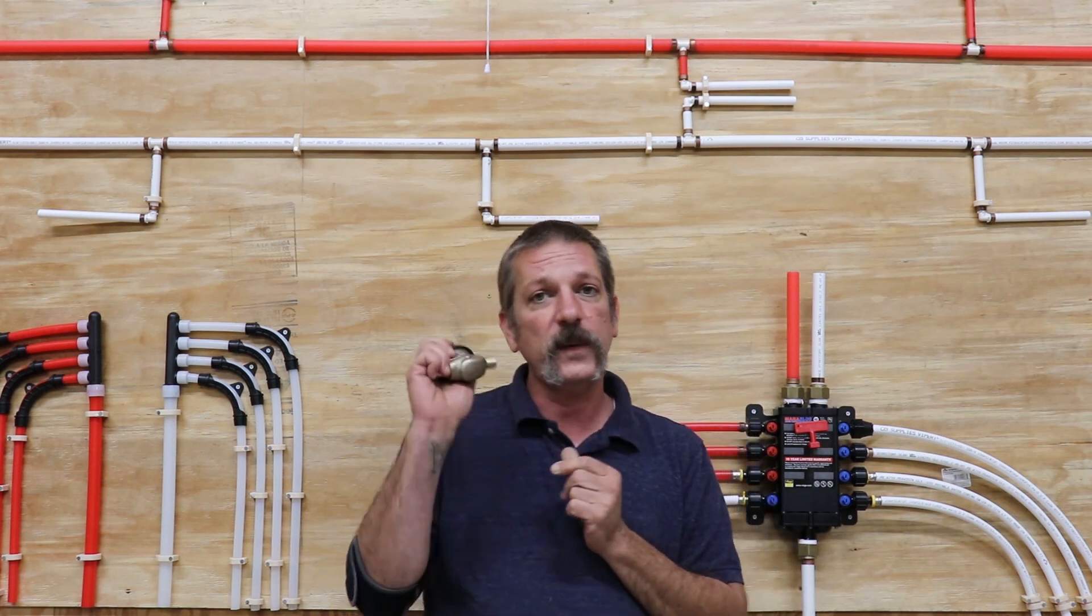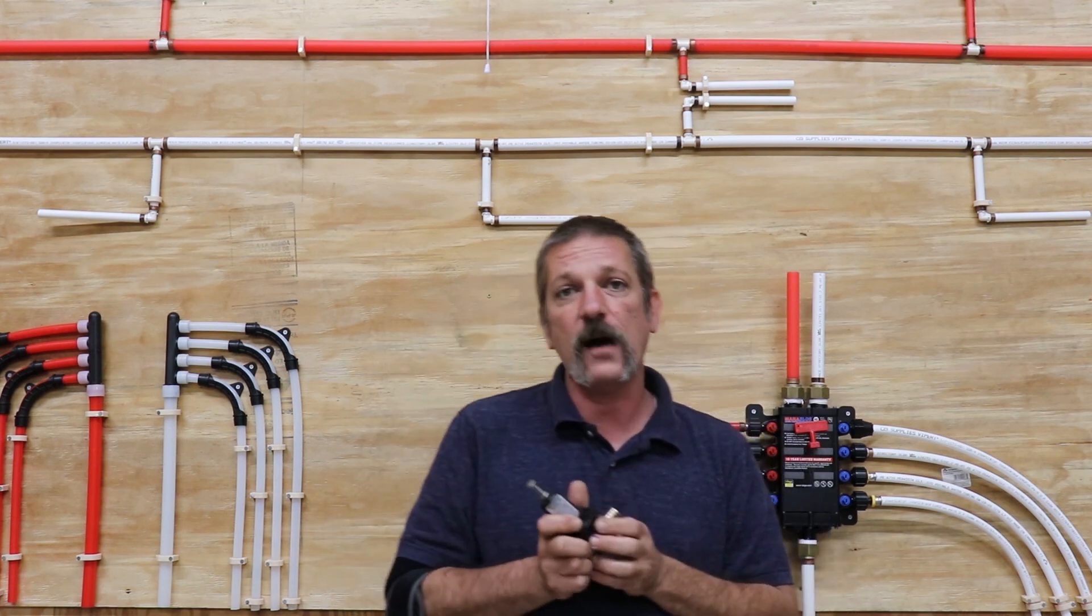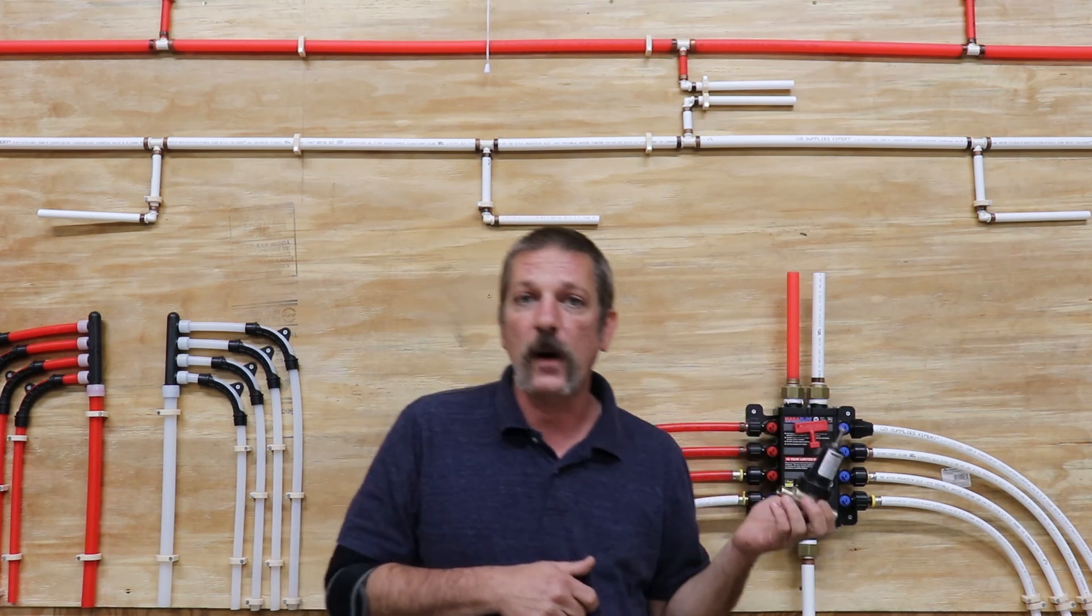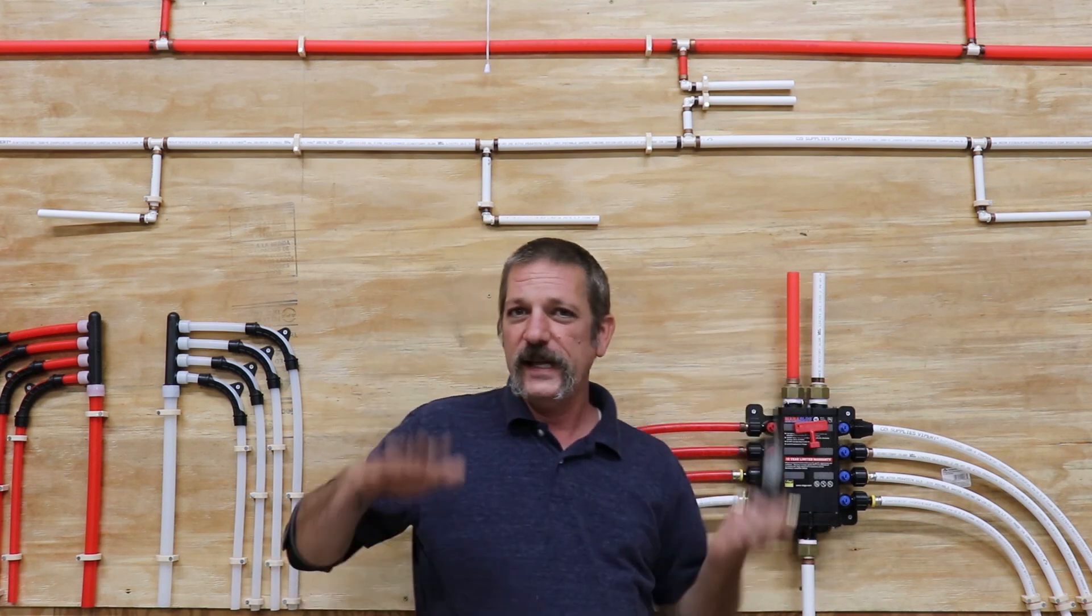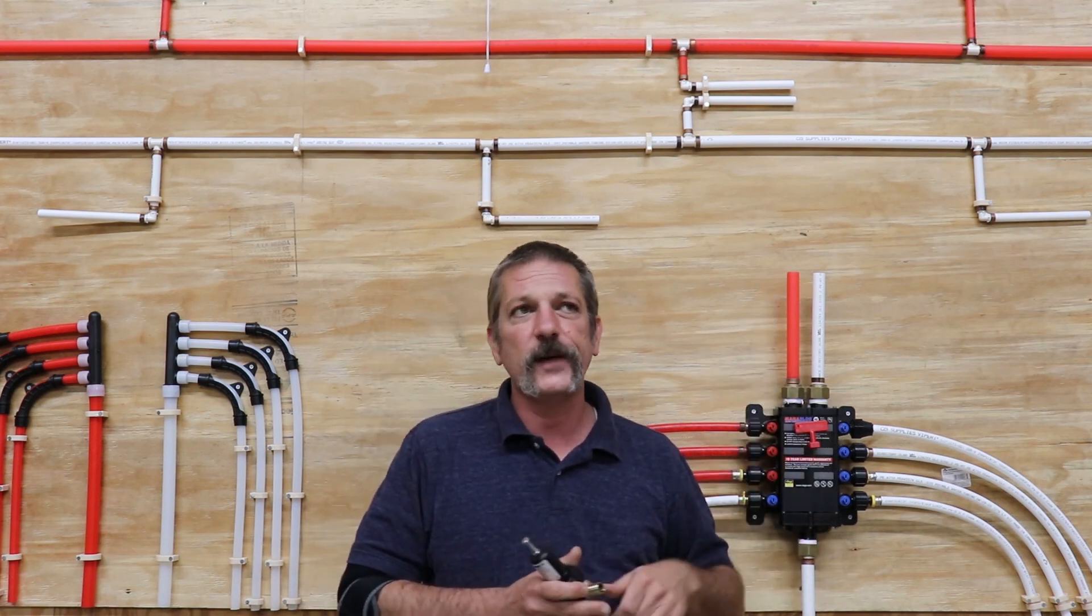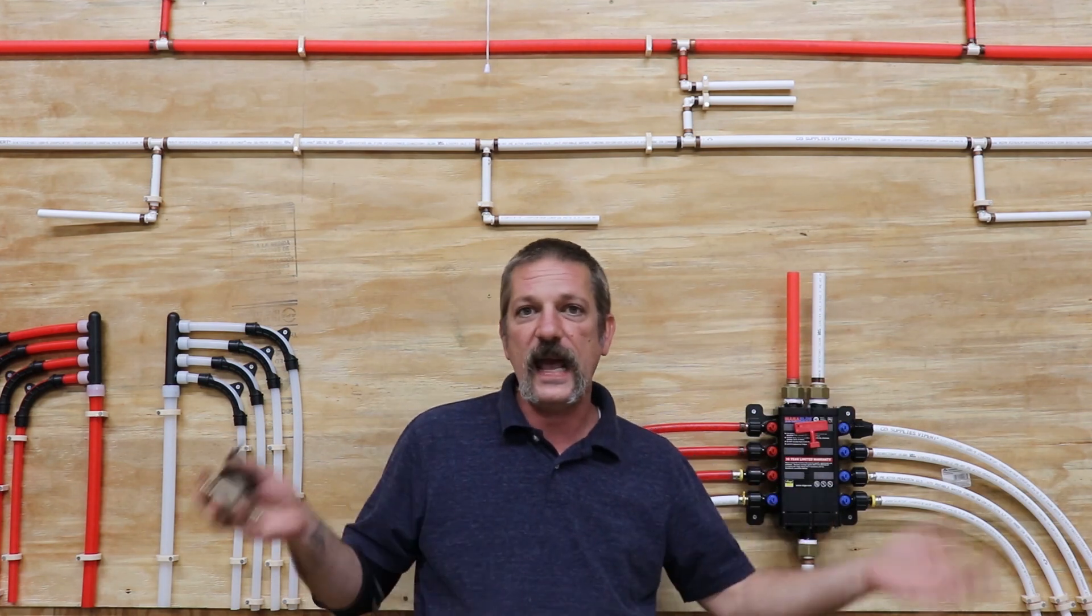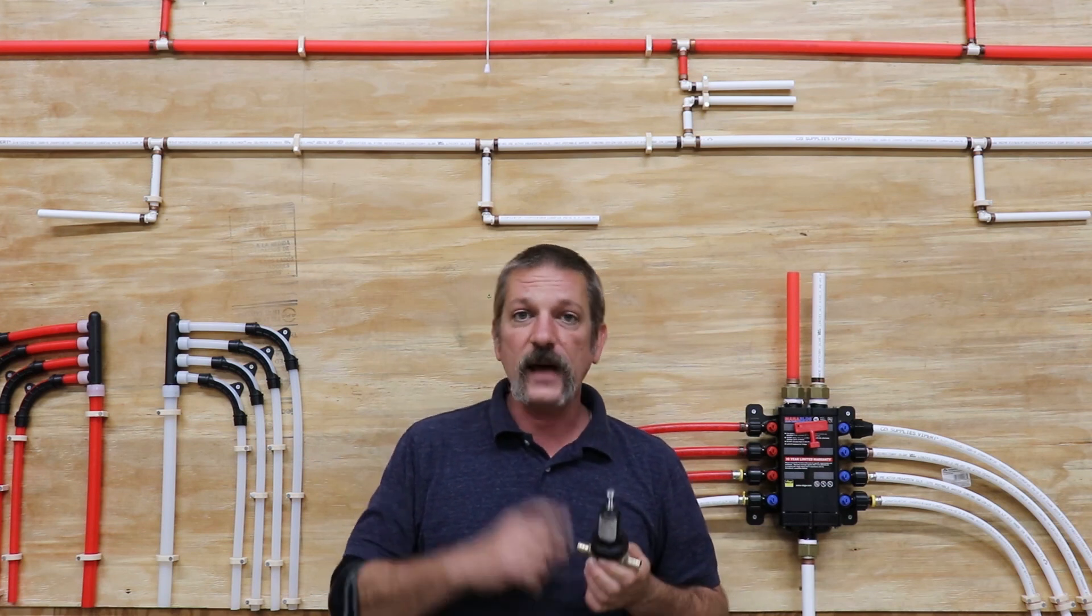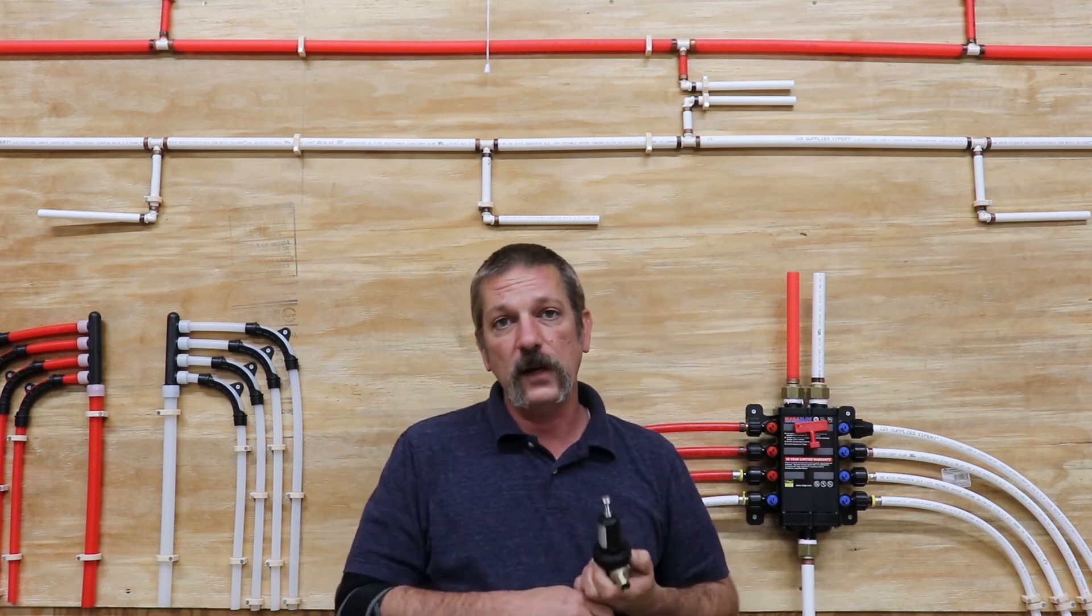The other thing, why this would be called a pressure regulating valve, say you've got a booster pump or something that's really varying in its pressures, say somewhere in between 60 and 80 psi. You can use this guy to hit that target of 75 psi because of the way the little valves and stuff in here work.